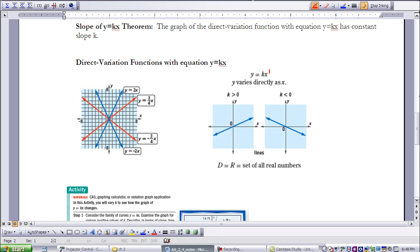We have a theorem that's been given to us, and that is the slope of Y equals KX theorem. And what that says is the graph of a direct variation function with the equation Y equals KX has constant slope K. So what that's telling us is that K is also known as our slope.